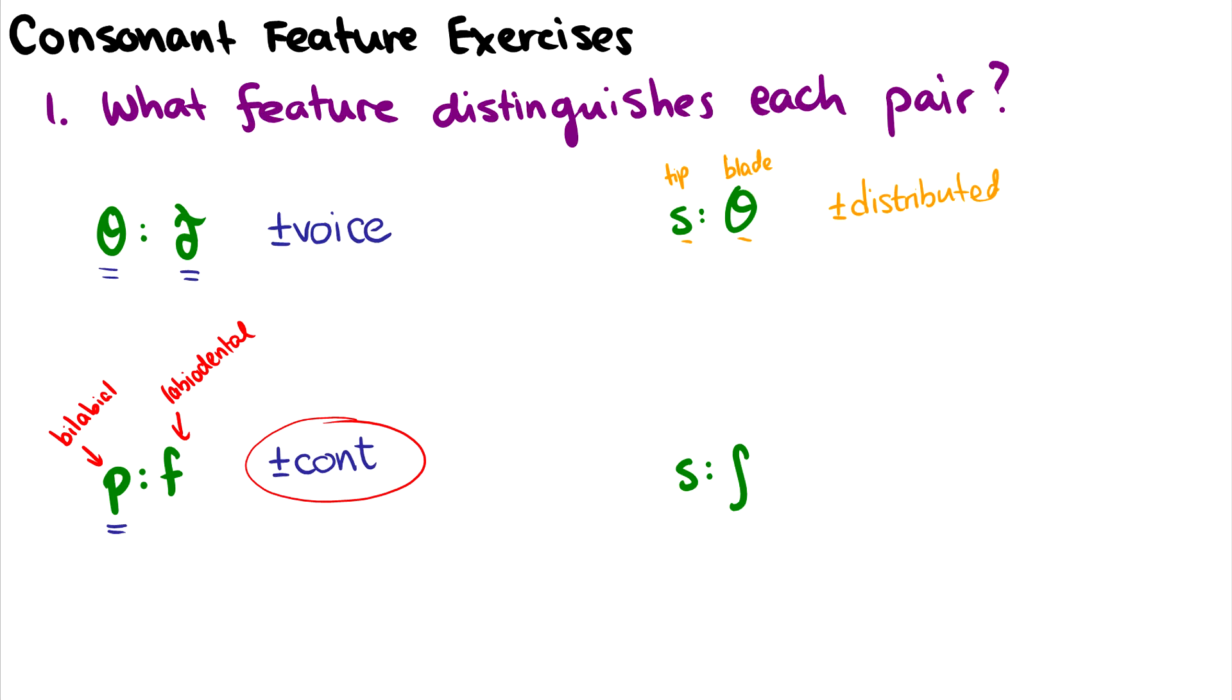Finally, what about s and ʃ? This is the alveolar fricative, and ʃ is the palatal alveolar fricative. So what feature under coronal features separates these two sounds? That is the plus or minus anterior feature. Remember, plus anterior is fronted, which means the alveolar ridge or dental, and minus anterior is the palate or palatal alveolar sounds.